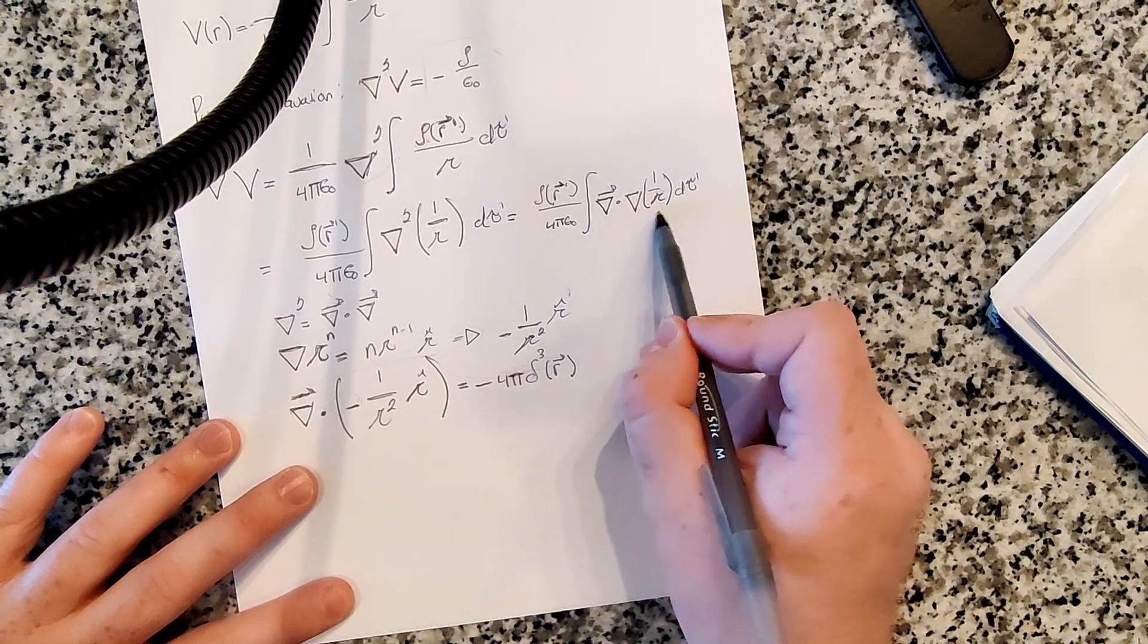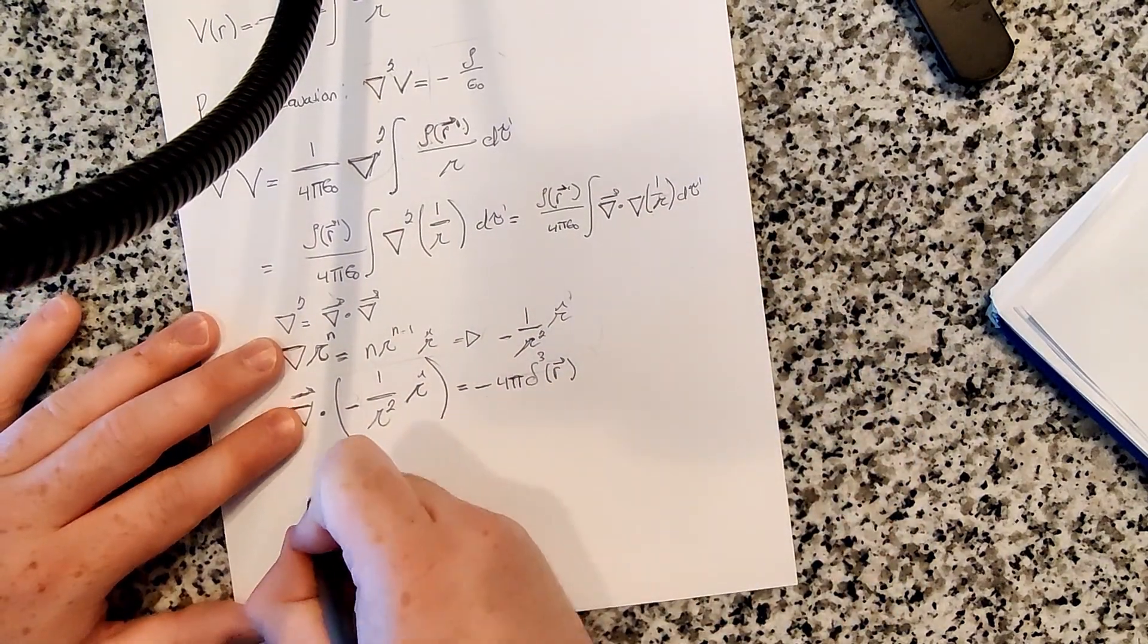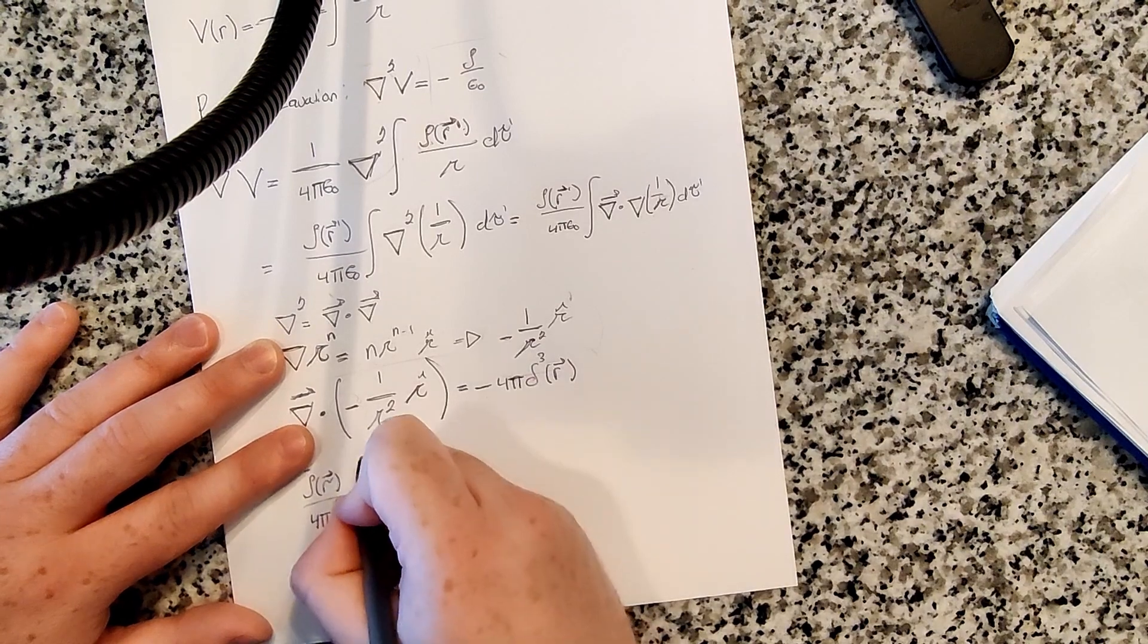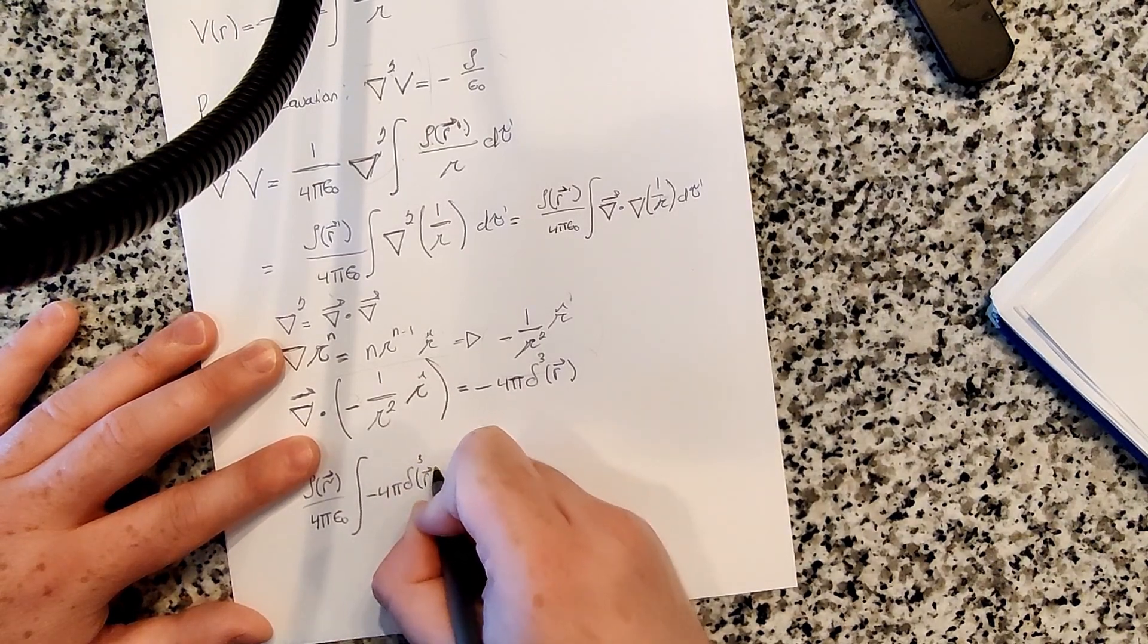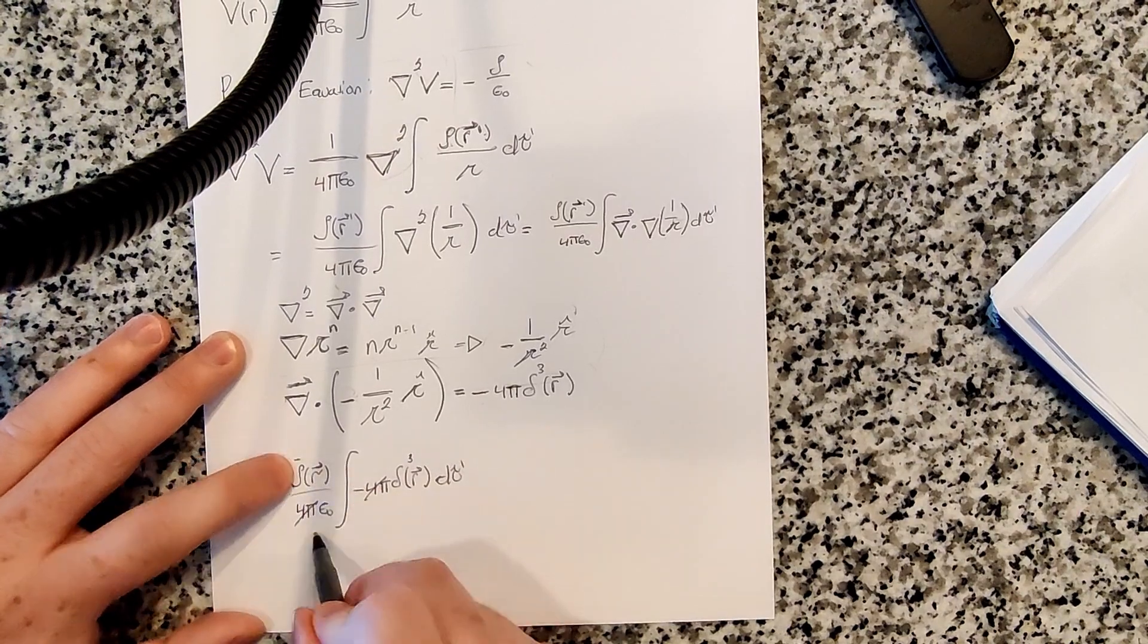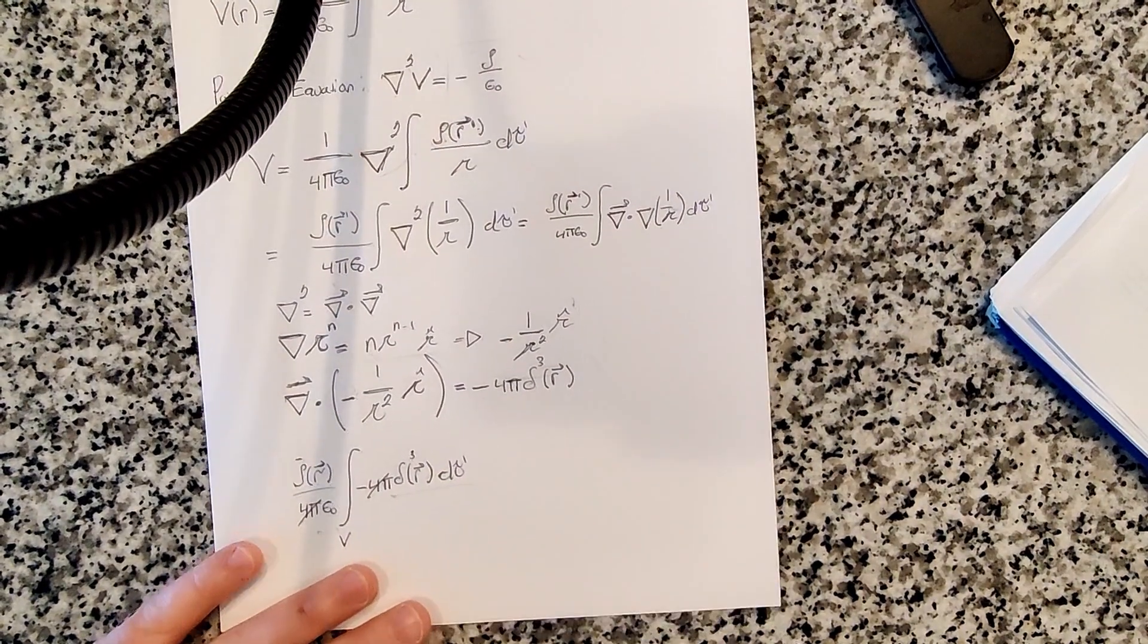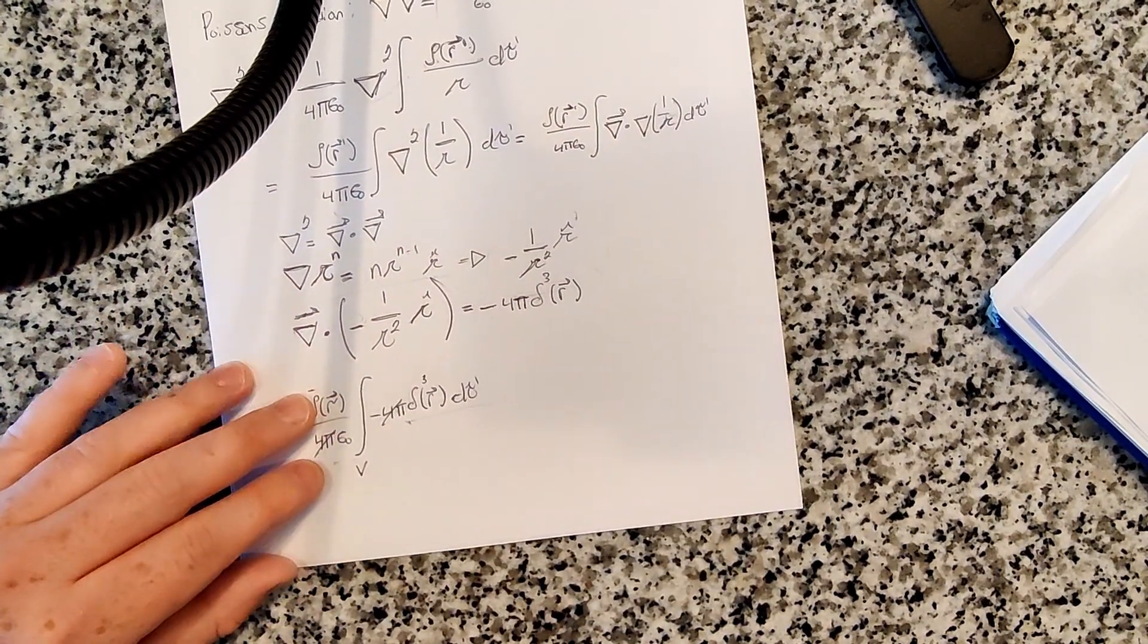And so plugging that into here, so this is what we plug in, since that's the Laplacian, basically what we just calculated, we end up with rho of r prime, and we get the integral minus 4 pi times the three-dimensional Dirac delta function, d tau, which 4 pi can come out and cancel with this 4 pi, right? So we just get minus rho over epsilon naught, and then the integral over all space or all over the entire volume we're considering of the three-dimensional Dirac delta function d tau is one, because essentially this three-dimensional Dirac delta function is zero everywhere except at the origin.